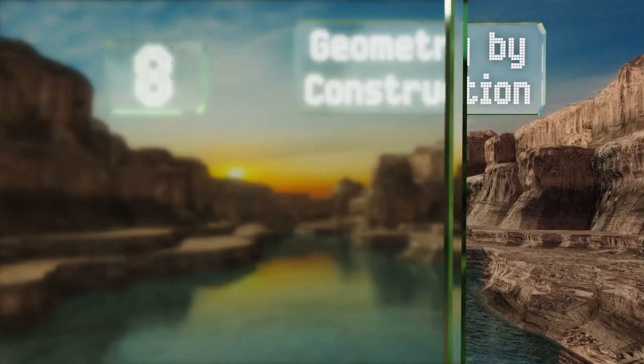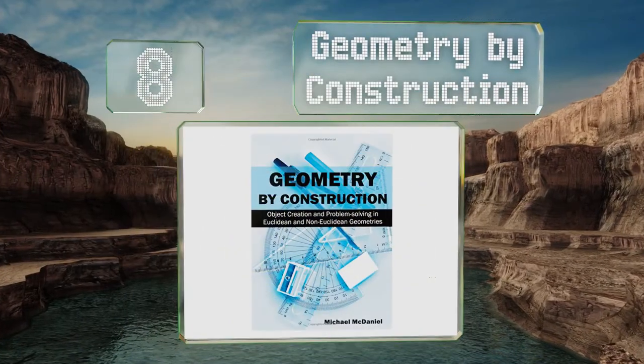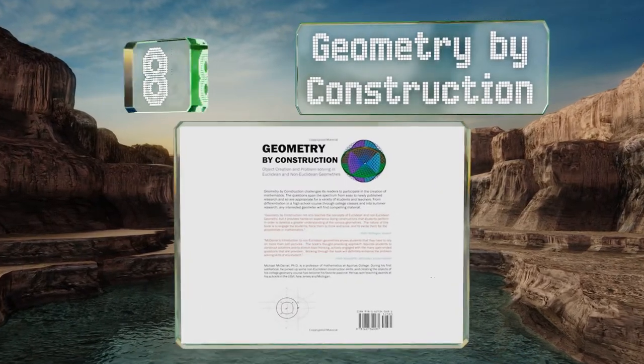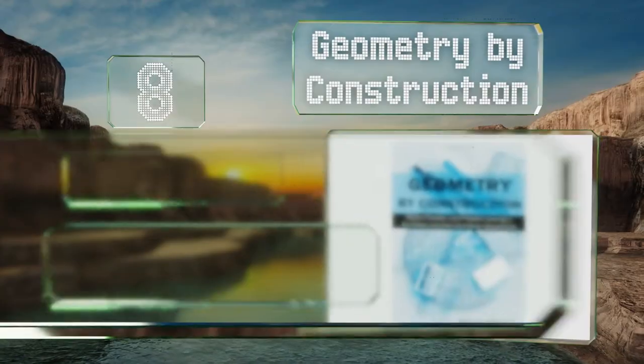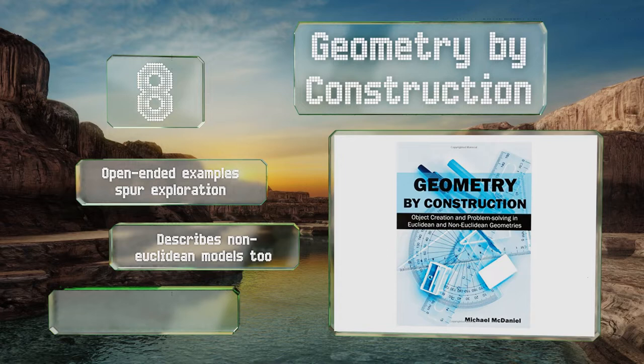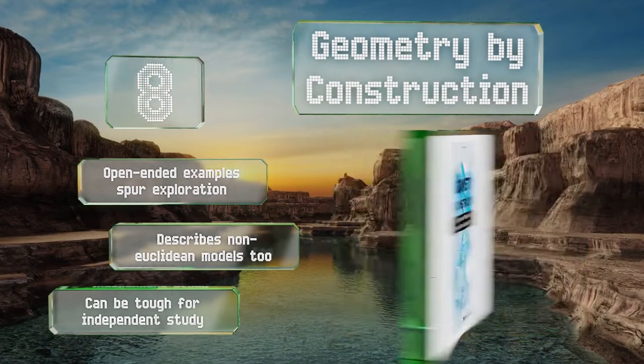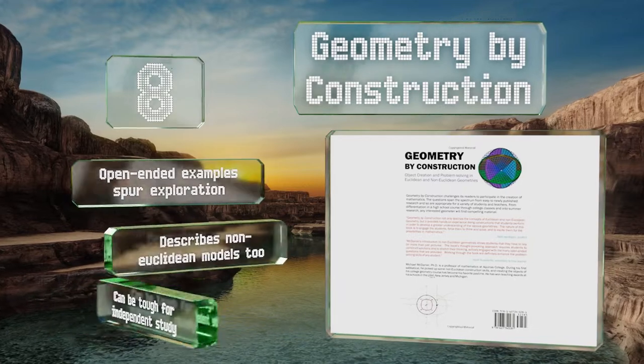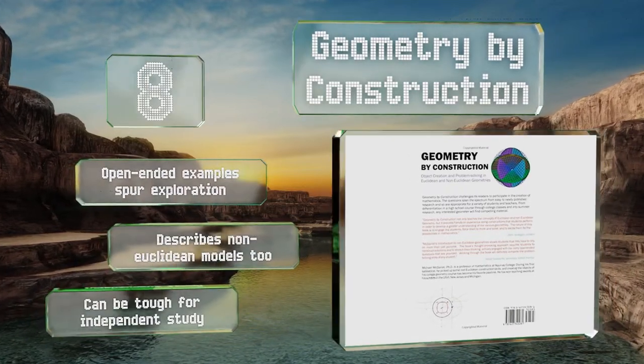Coming in at number eight on our list, advanced learners are sure to find something new and instructive in Geometry by Construction as it spans the science's origins through modern applications. This is an old school book that expects you to use pencil and paper instead of looking up answers online. Its open-ended examples spur exploration and it describes non-Euclidean models too. However, it can be tough for independent study.